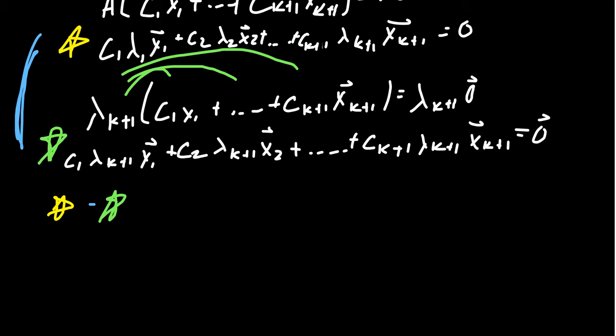Well, you can combine like terms. You can combine the X1s together. And when you combine the X1s together, you're going to get C1 times lambda 1 minus lambda K plus 1, times X1. And then you're going to do the next one. You're going to get C2 times lambda 2 minus lambda K plus 1.